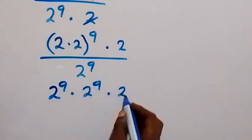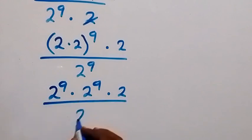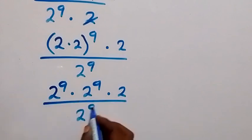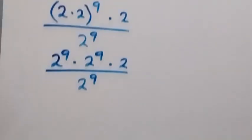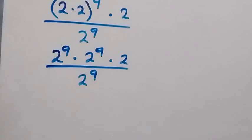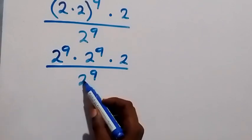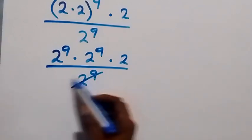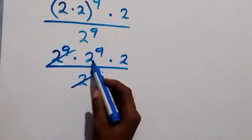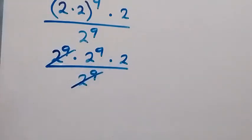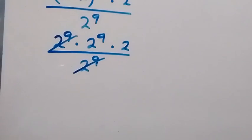This is times 2, divided by 2 raised to power 9. From here, one of the 2 raised to power 9 terms cancels out, and we are left with 2 raised to power 9 times 2.